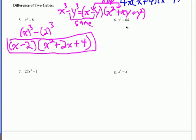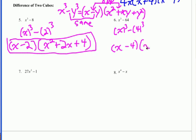Let's try the next one. No GCF. It's a binomial. Is it a difference of cubes? The cube exponent gives it away. It's also a difference, and I know 64 is a perfect cube. Because of this cube exponent, I know it's going to be a difference of cubes as opposed to difference of squares. So we have x cubed minus 4 cubed. The first parenthesis is x minus 4. Then the first term squared, opposite sign, those multiplied together, and square the last term. Done.